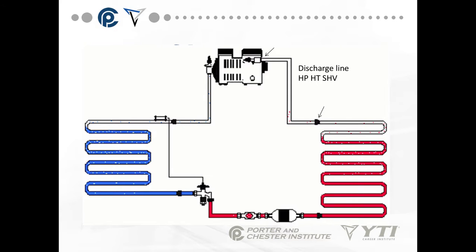The discharge line is found in the top right-hand corner of this slide. The discharge line contains a high-pressure, high-temperature, superheated vapor. We call it superheated because it has very high sensible heat — it includes the heat taken out of the space we're trying to cool through the boiling process in the evaporator, plus the heat of compression. Anytime you compress a vapor, it creates heat. That superheated vapor is pushed out through the discharge line at high pressure and high temperature into the condenser.